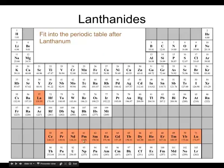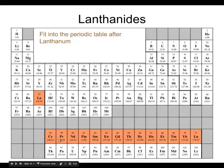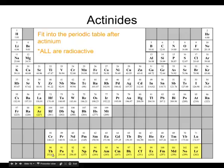Just a quick note: down here in the inner transition metals, the first row is called the lanthanides — which is unusual because we don't usually give names to rows on the periodic table. They're called the lanthanides because they follow the element lanthanum, which is where the inner transition metals fit in. The row underneath is called the actinides, because they follow actinium. All of the actinides are radioactive — every single one of them.